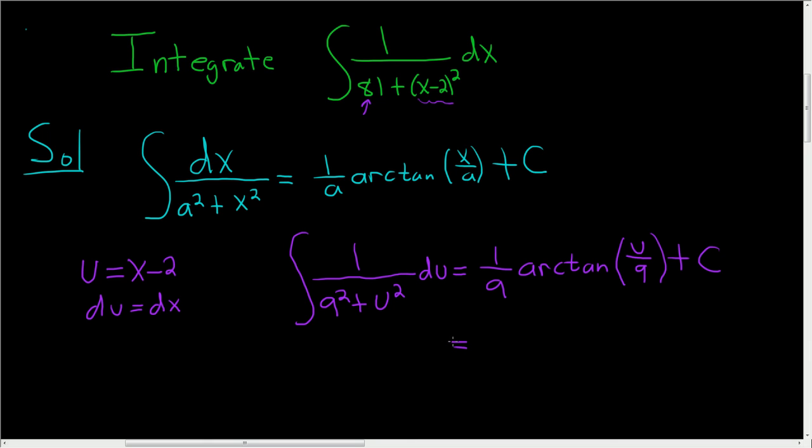To finish, we'll just substitute u back in. So this is 1 over 9 arctan. And then u was x minus 2. And this is being divided by 9. And then plus our constant C. I hope that made sense.